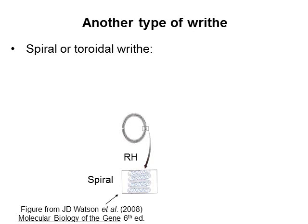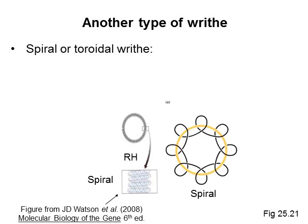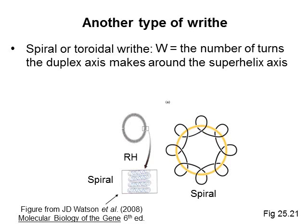The other type of writhe is called spiral, or toroidal writhe — I'll always call it spiral. In spiral writhe, the double helix makes coils around a central superhelical axis, like the original coil made by a telephone cord. Here is a figure from another textbook that shows a right-handed spiral writhe. The double helix is wound around like the cord. In the figure from your book, the yellow line is the superhelical axis, and the black line represents the double helix coiling around it. The spiral writhe is defined as the number of complete turns the duplex axis of the double helix makes around the superhelical axis.